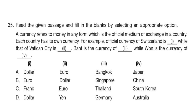Question 35. Read the given passage and fill in the blanks by selecting an appropriate option. A currency refers to money in any form which is the official medium of exchange in a country. Each country has its own currency. For example, the official currency of Switzerland is 1, while that of Vatican City is 2. Baht is the currency of 3, while 1 is the currency of 4. The answer is option C: 1 is Franc, 2 is Euro, 3 is Thailand, and 4 is South Korea.